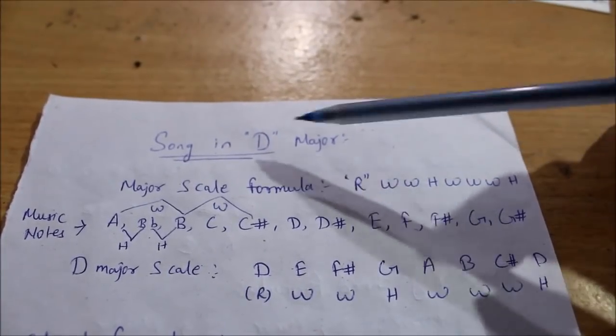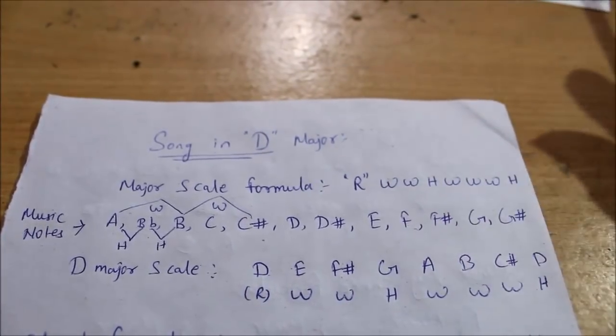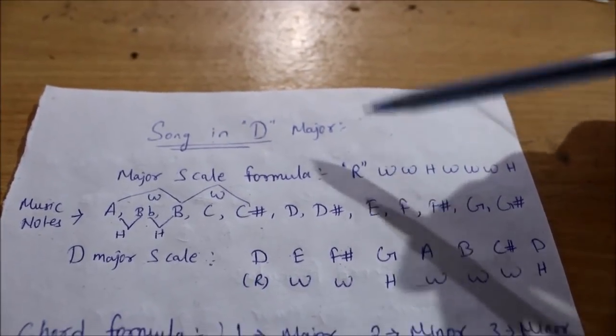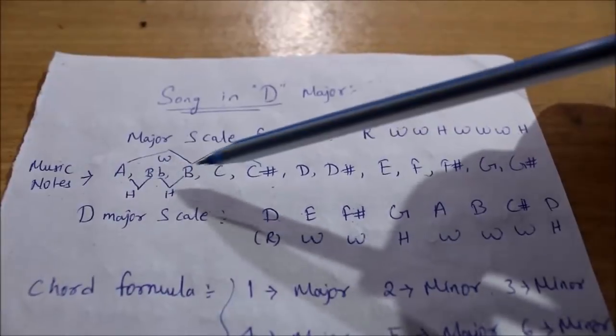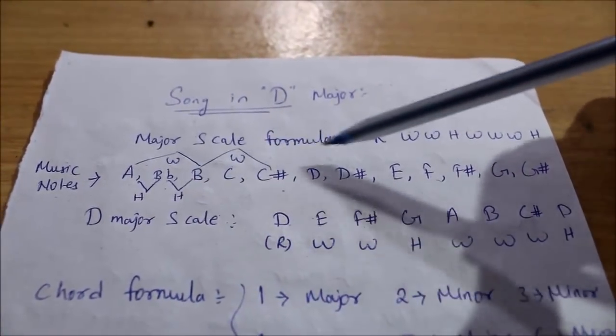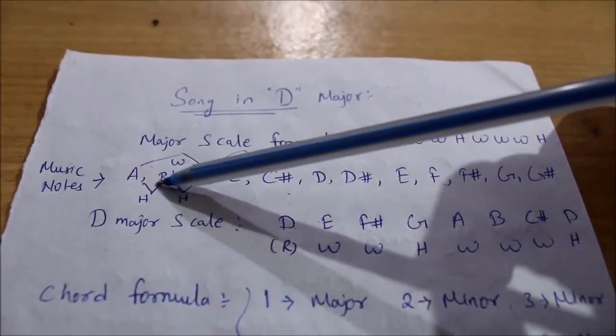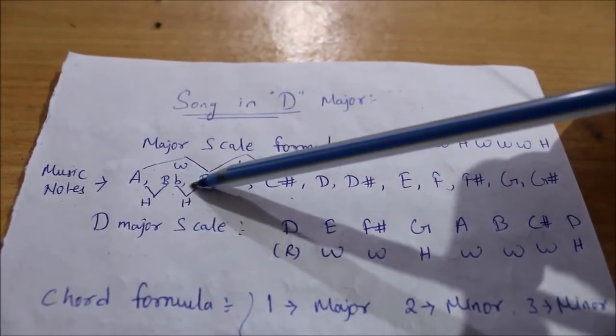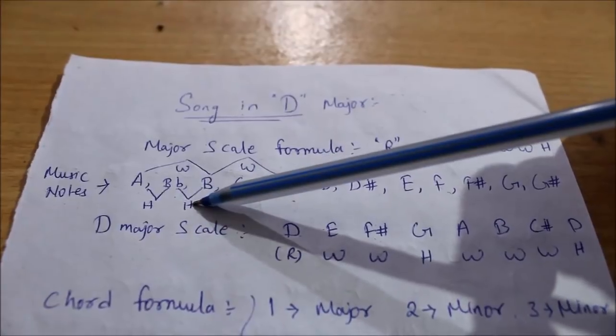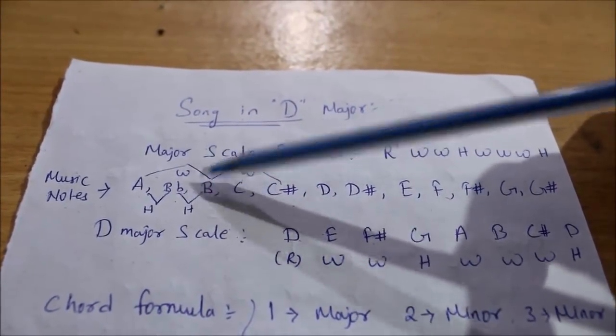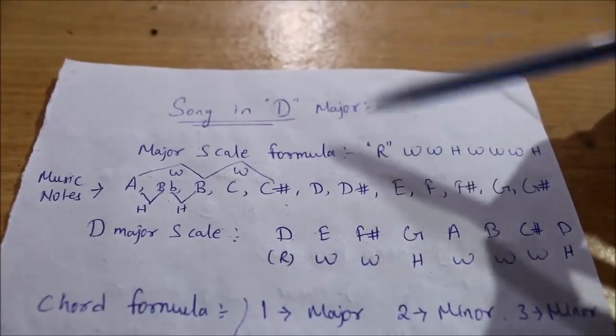The root means D major, C major, or whatever key - you always write the root note first, which is D. Whole means you write it in music notes: A, Bb, C, C#, D, D#, E, F, F#, G, G#. If you go from A to B, that's a whole note. A to Bb is a half note. This is how we will derive all notes.